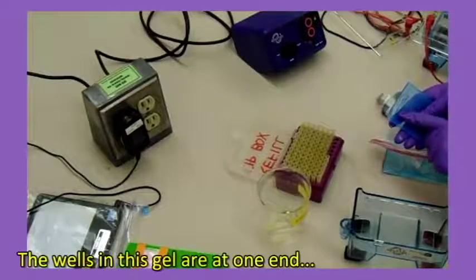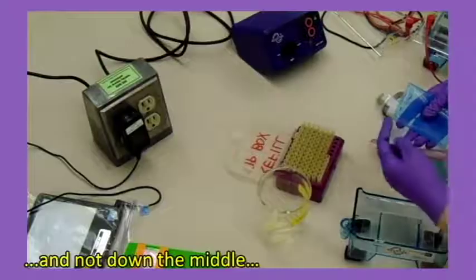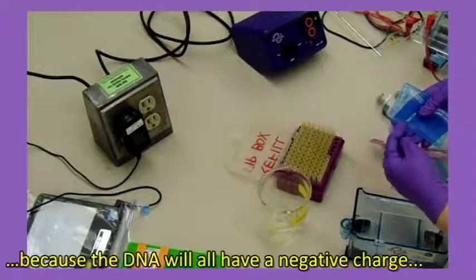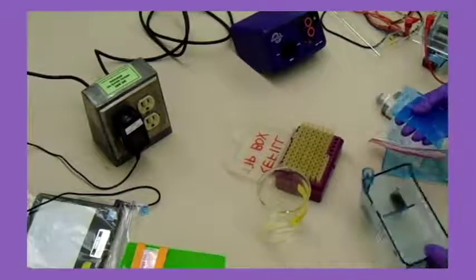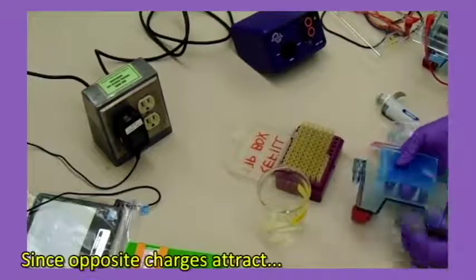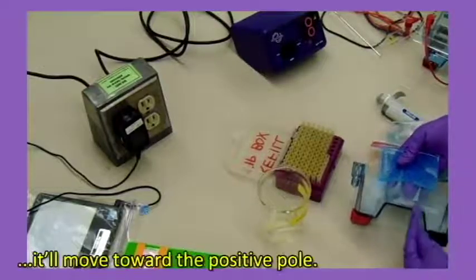The wells in this gel are at one end and not down the middle, because DNA will all have a negative charge and will run in the same direction. Since opposite charges attract, it'll move toward the positive pole.